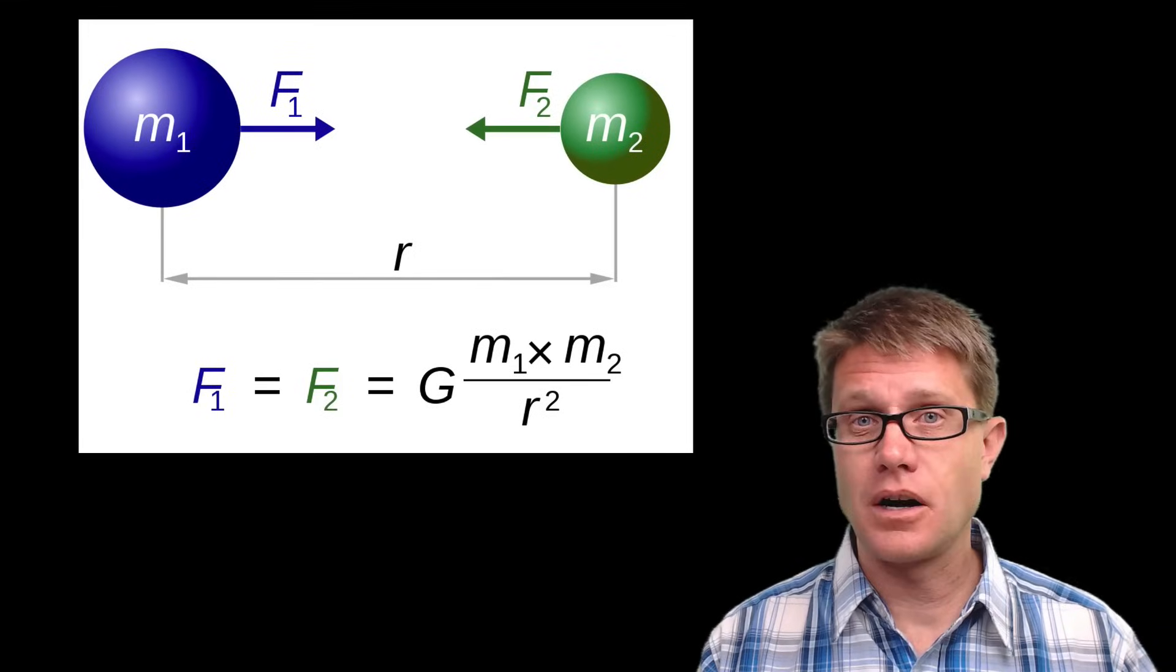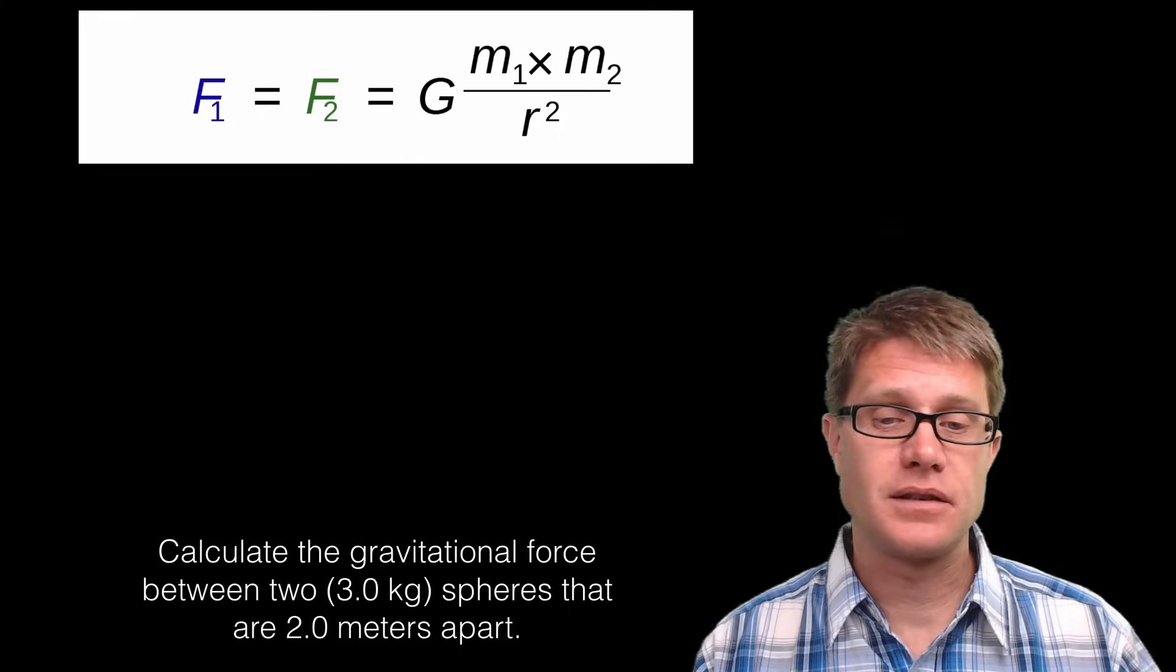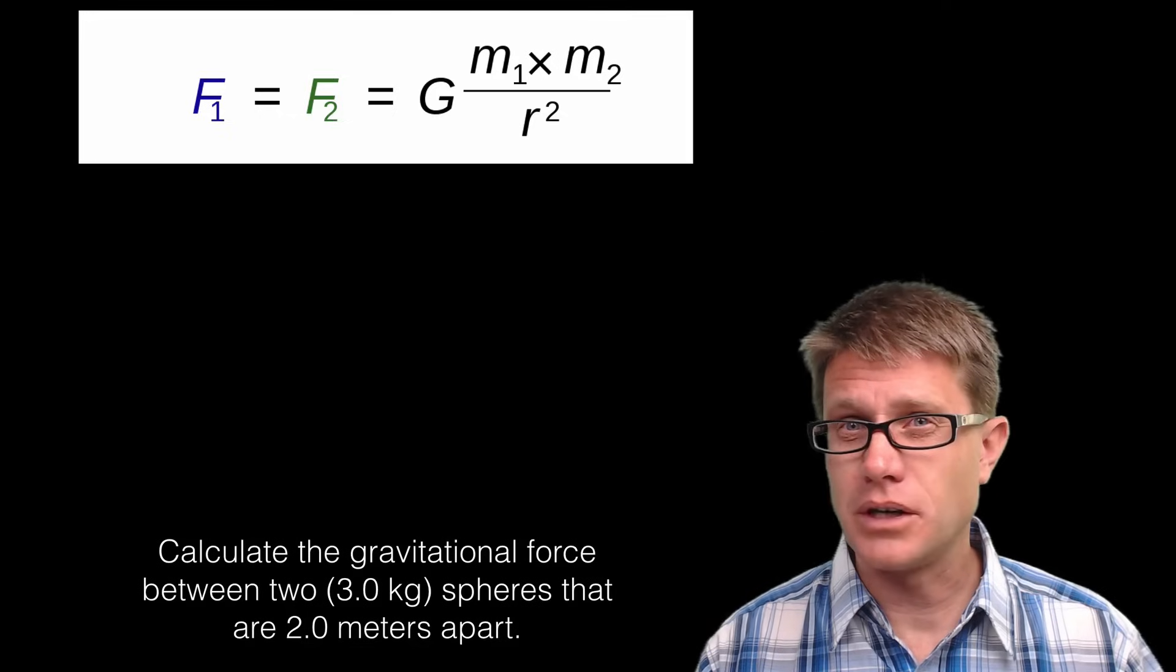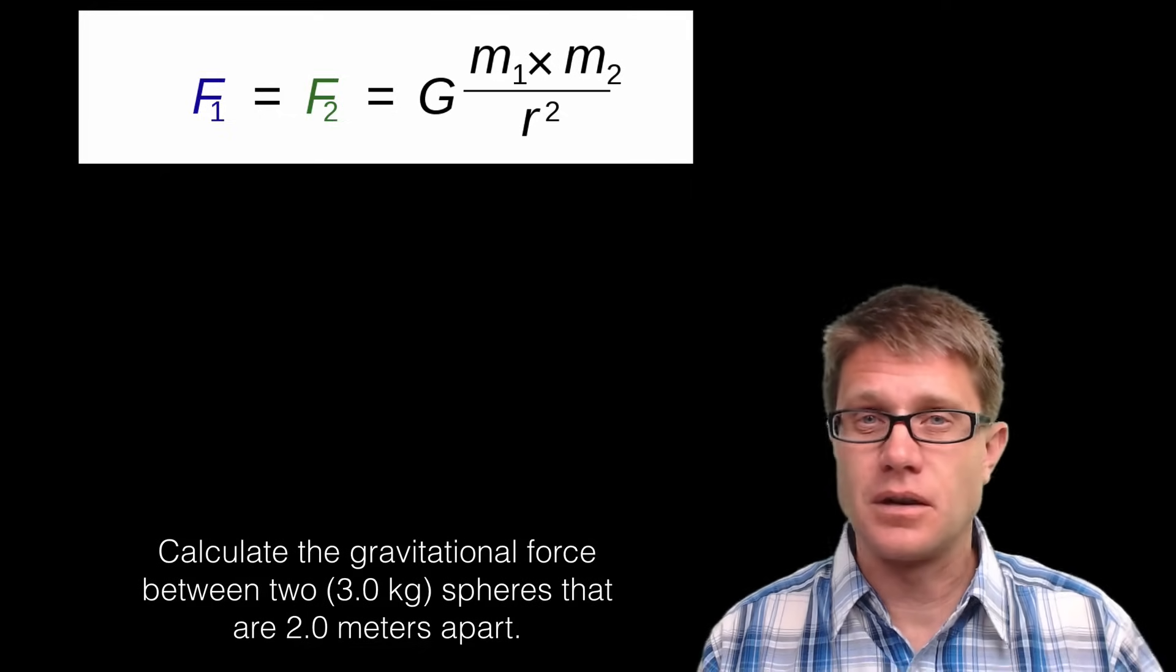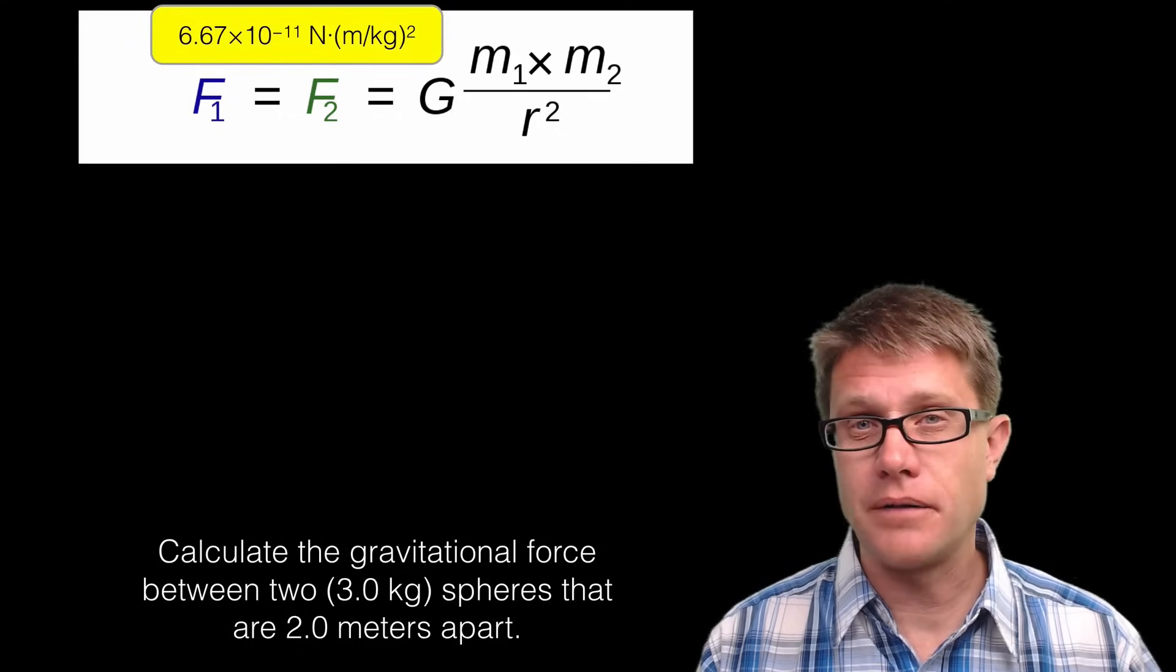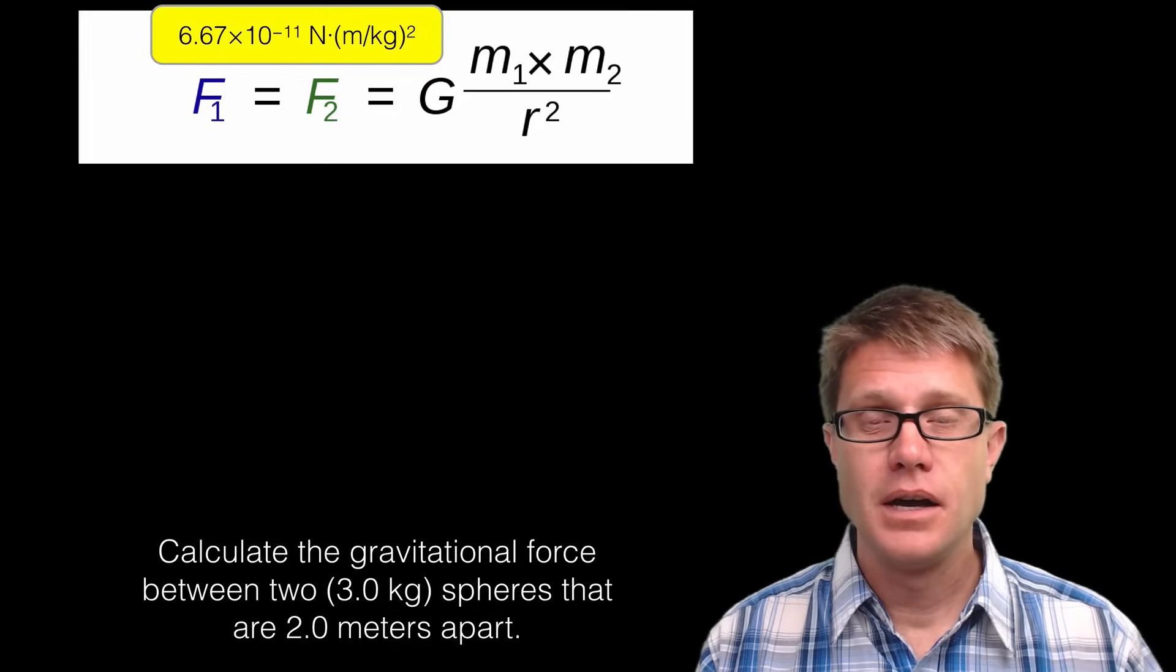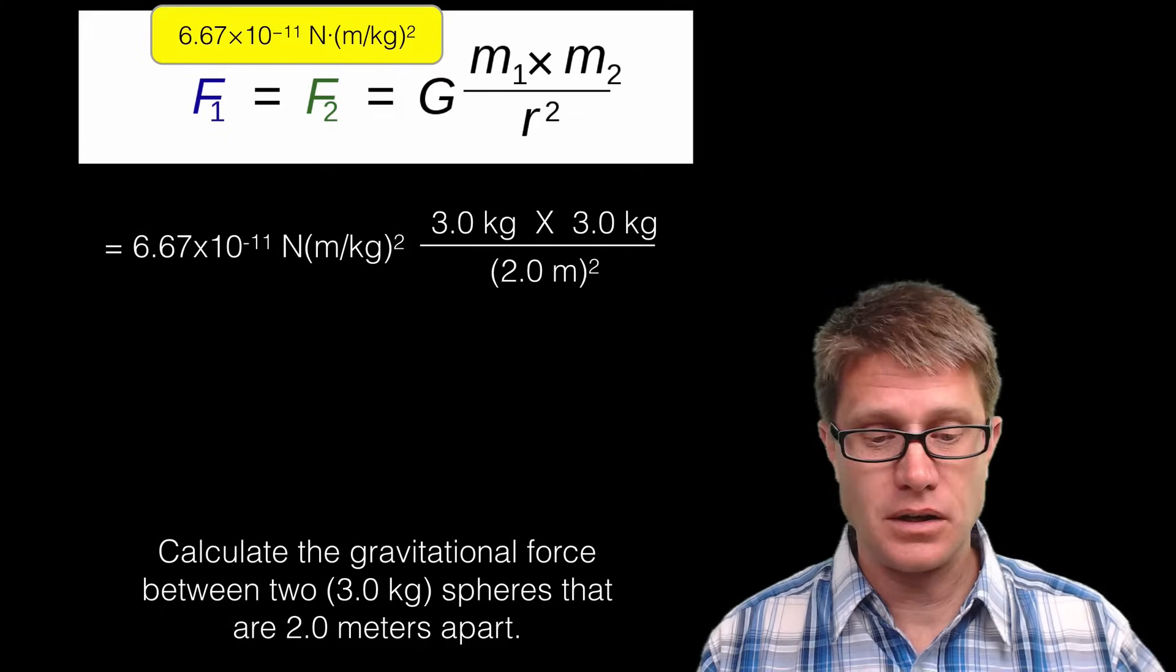And so if this is our equation, let me show you how to solve a simple problem. And this is what you might see in a physics class. Calculate the gravitational force between two 3.0 kilogram masses that are 2.0 meters apart. And so this is going to be a really small value. We know the gravitational constant is 6.67 times 10 to the negative 11th. I am given the masses and the center-center distance. And so it is really easy to solve that.